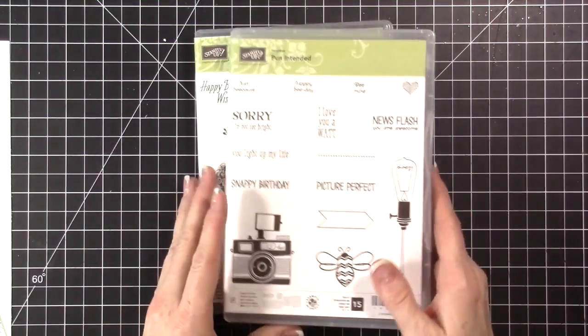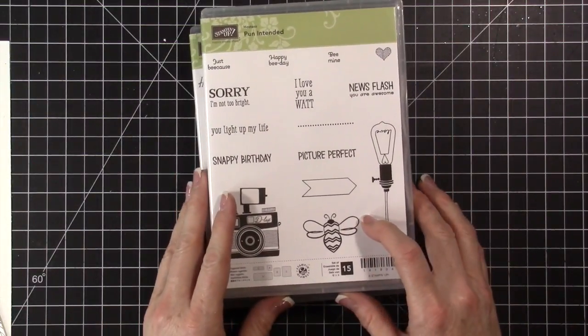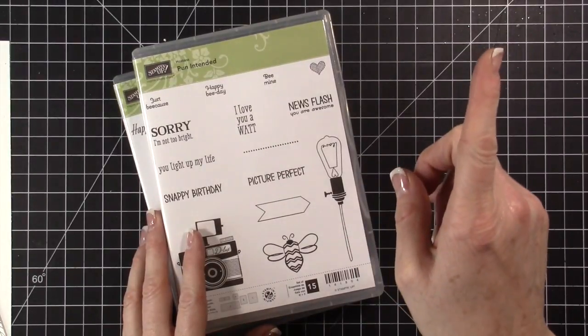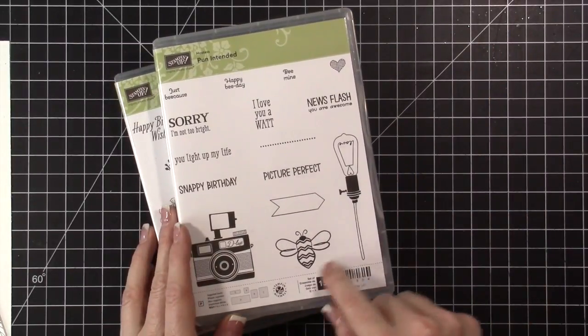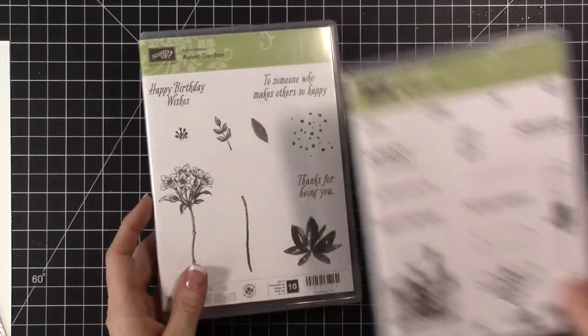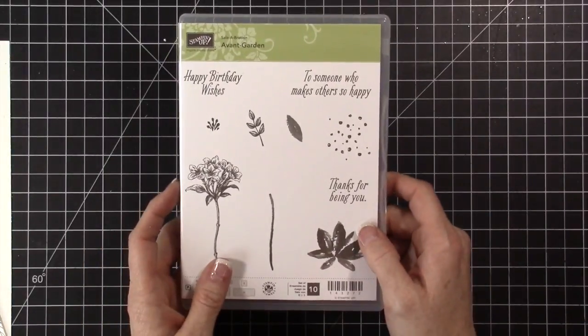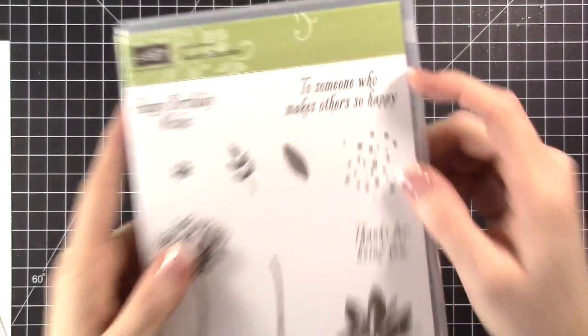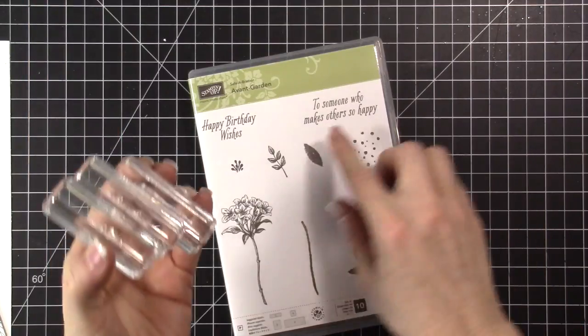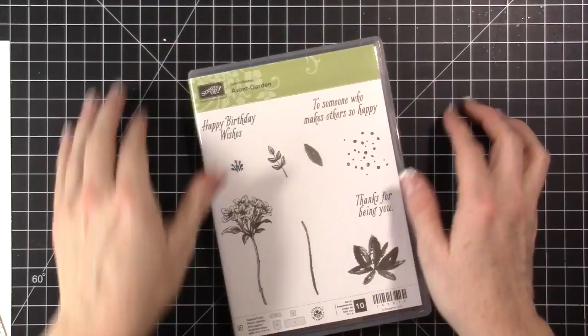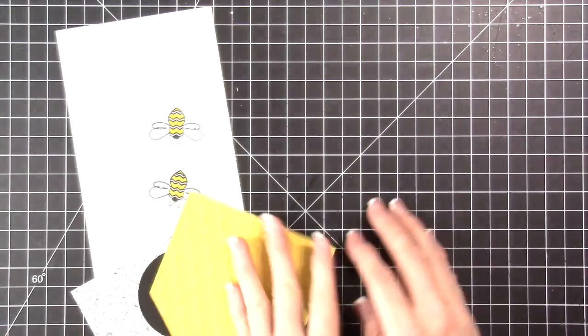And then this stamp set was out on my desk already from my project yesterday, I'll throw a card right up here and you can check that out. So it was out on my desk already so I just went ahead and I used this bee, it worked perfect. And then I'm going to be using this stamp set for this sentiment. I've cut this apart so instead of it being in two lines I wanted it to be in three. So I've cut mine apart and that's what we're going to be using. Let's go ahead and dive in and get started.